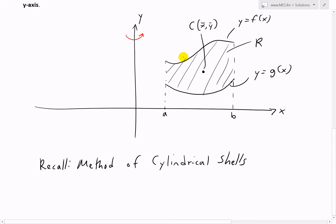The method we'll use to find this volume is the method of cylindrical shells, which I covered in earlier videos, for finding volumes when you revolve around the y-axis. The idea is to take a sub-interval at position x — the center point of a small rectangle — and we call this x-bar sub i, which is also the center of mass of that rectangle by symmetry.